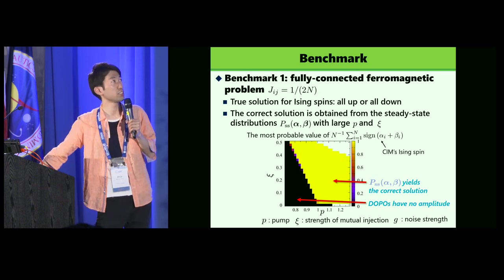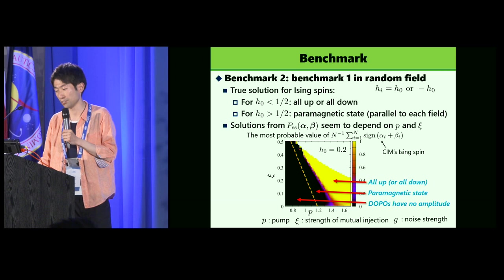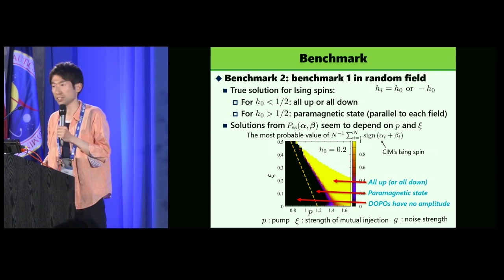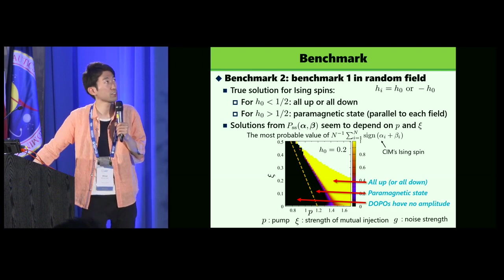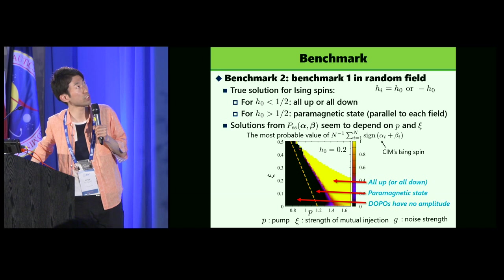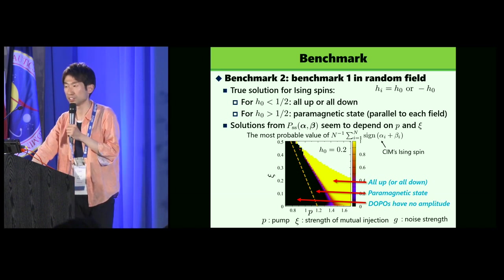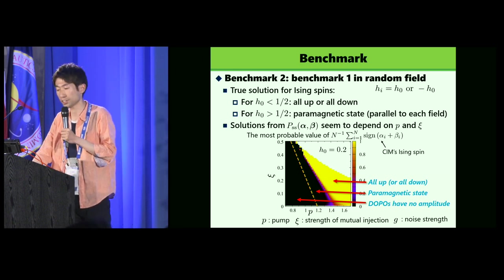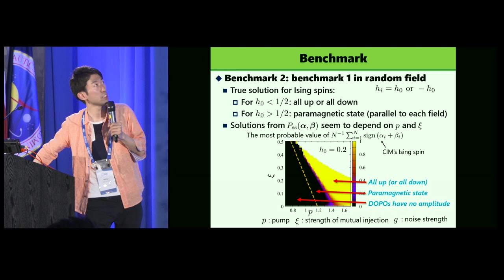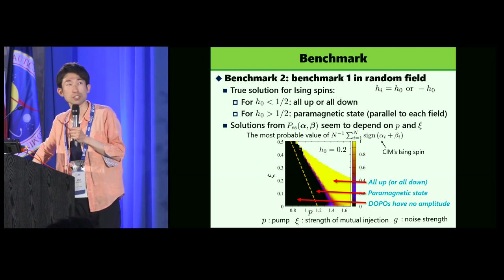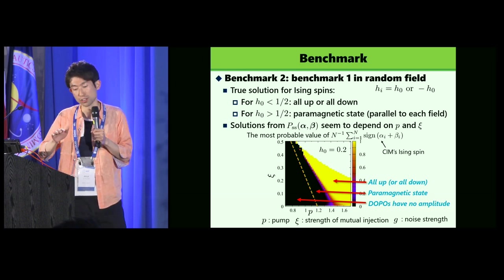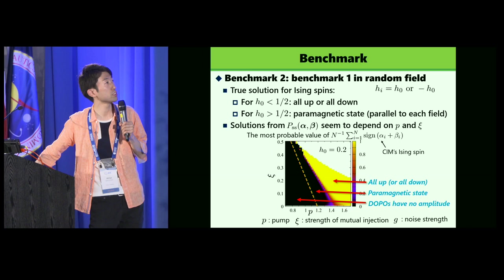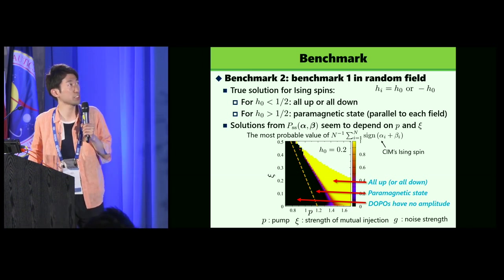This is a trivial one. So next is a little more non-trivial one. Benchmark two is benchmark one in random field. That is, the coupling constant is fully-connected ferromagnetic uniform one. But we add a random field, a random binary field. It's longitudinal field, H_i, is equal to H_0 or minus H_0 at random. So the solution for Ising spins of that program are well known. For H_0 smaller than 1 over 2, all up or down is correct one. And for H_0 larger than 1 over 2, paramagnetic state, that is where the spin is parallel to each field, is correct solution.